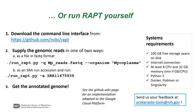In order to run RAPT on your own machine, you need at least 100GB of free storage space on disk, an internet connection, and the machine must have at least 8 CPUs and 32GB of memory — we recommend 4GB of memory per CPU. You need to have Python and you need to be able to run Docker, Podman, or Singularity.